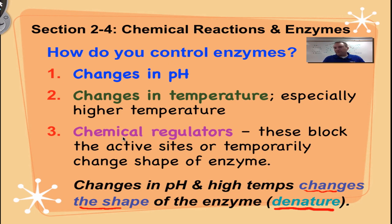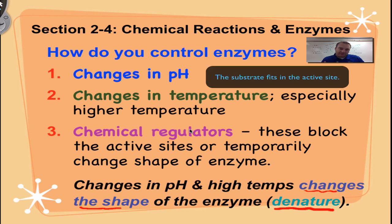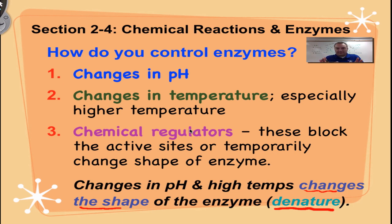Here's the third way that living things control enzymes, and it's done through chemical regulators. These are other chemicals that will do one of two things: they either block the active site, or they cling to the enzyme at a different location and cause the active site to close. Both have the same effect — they turn off the enzyme — but they do it in slightly different ways. Let's look at those two types of chemical regulators in more detail.